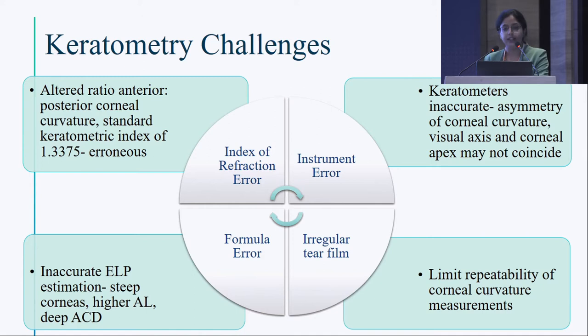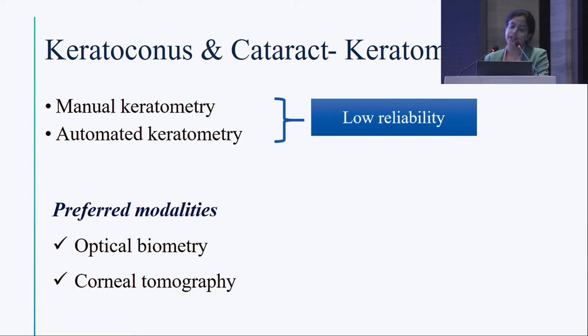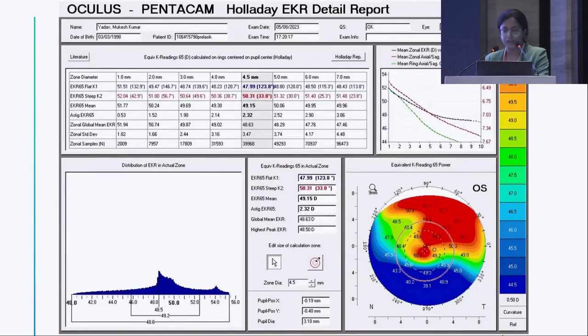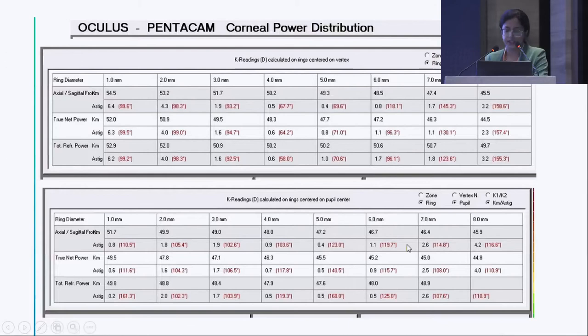Manual keratometry and automated keratometry have low reliability. Preferred modalities are optical biometry and corneal tomography. With newer tomographic devices, you get true net power maps and equivalent K readings that take into account both the anterior and posterior corneal surfaces. Keratometry will always be overestimated in keratoconus. Studies show that 4.5 mm is the best zone for keratometry for more accurate readings. You can select the zone to calculate flat and steep K values.